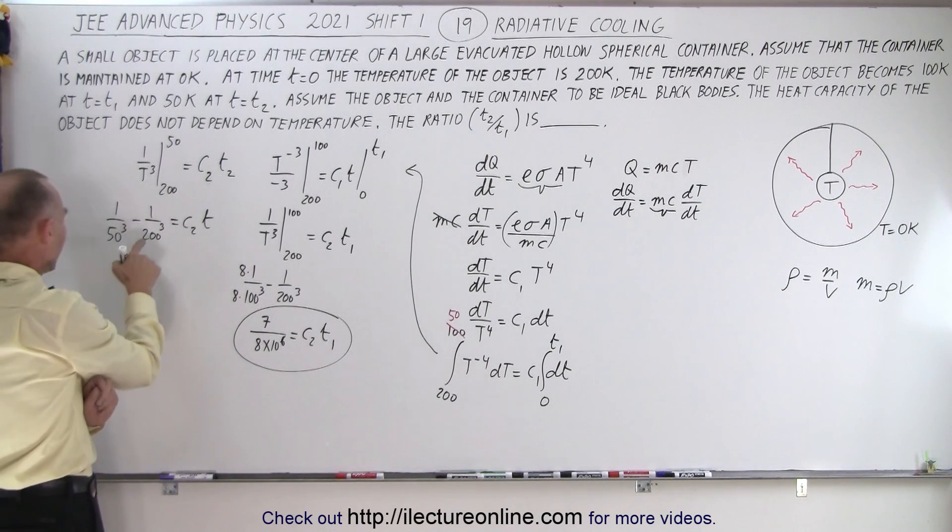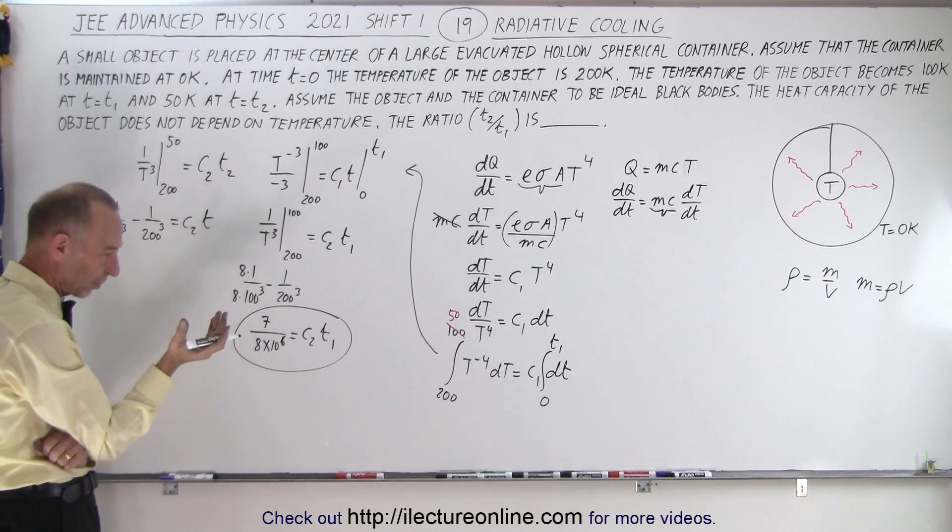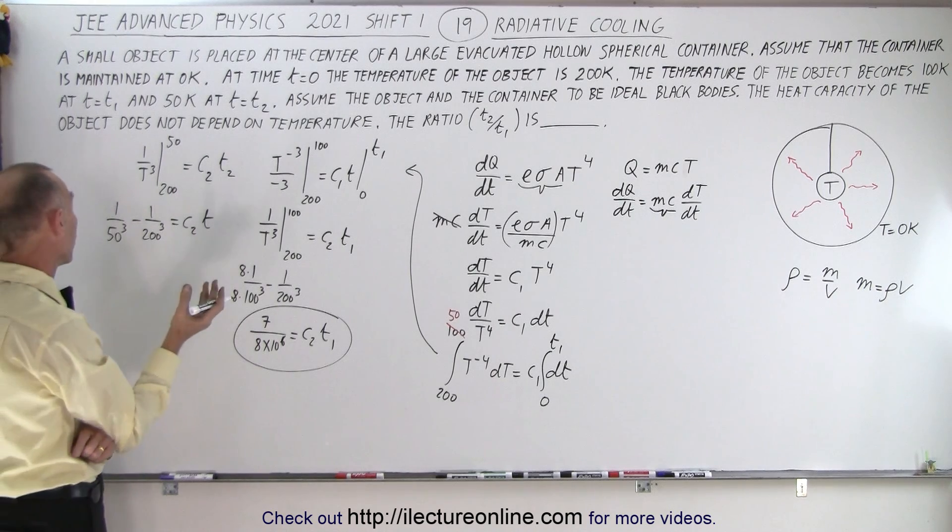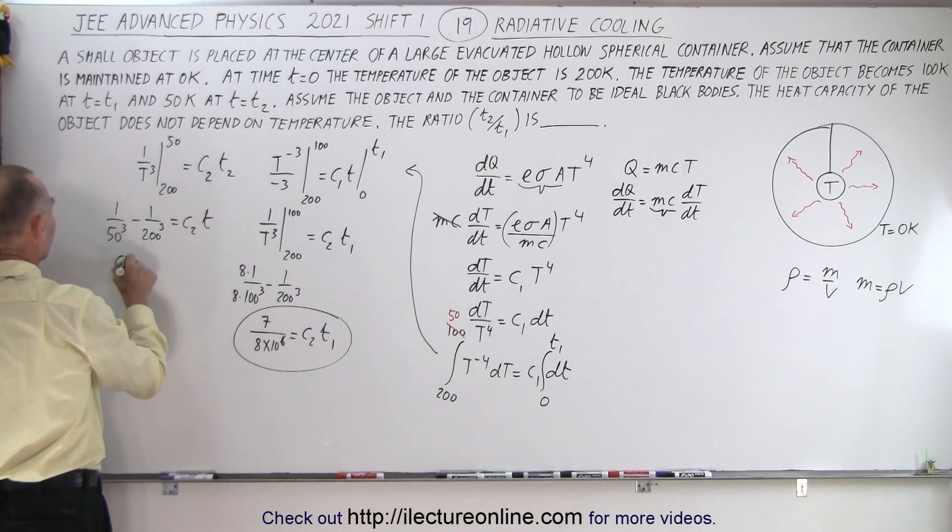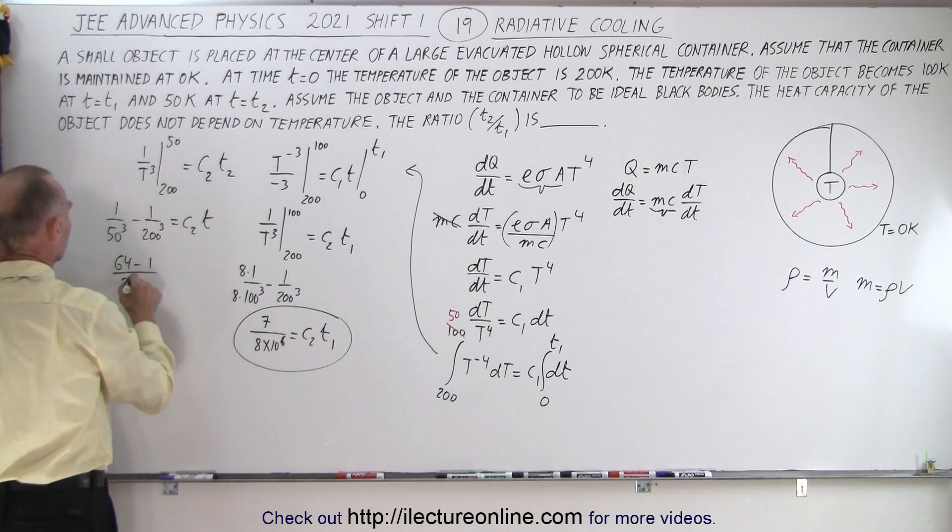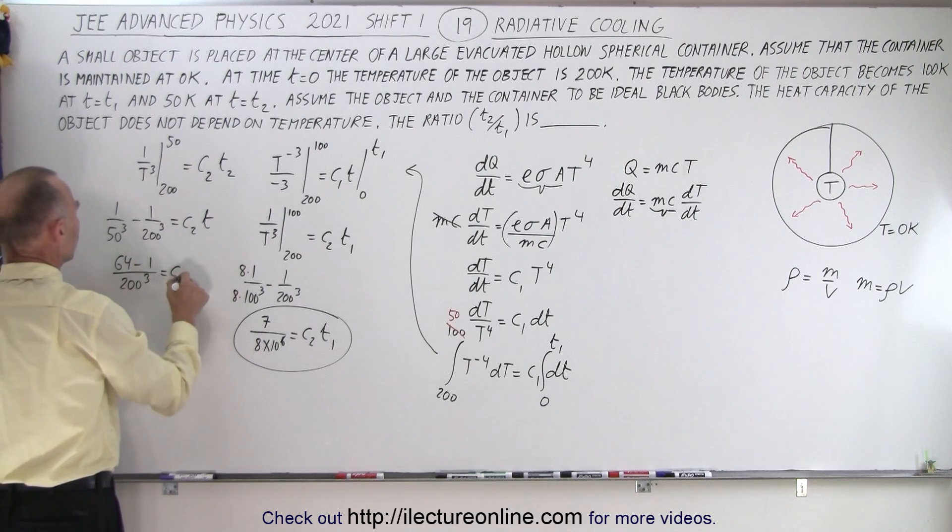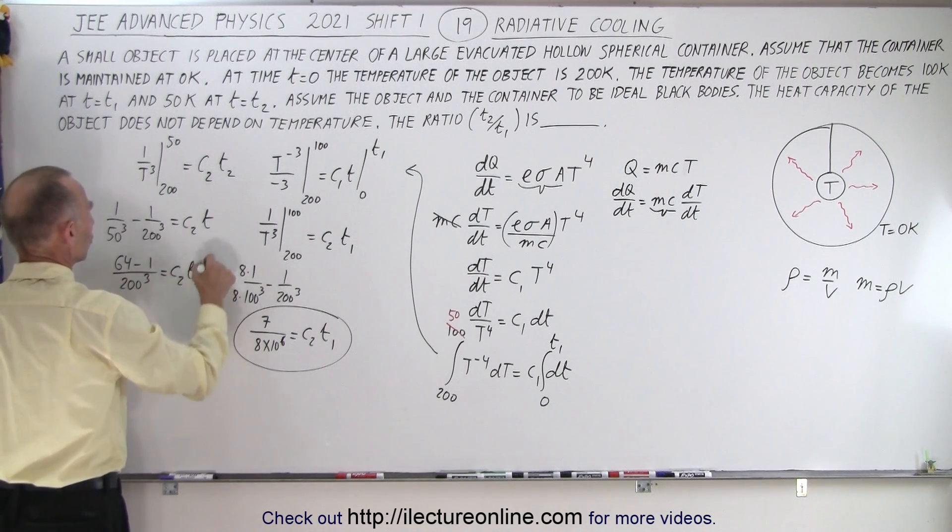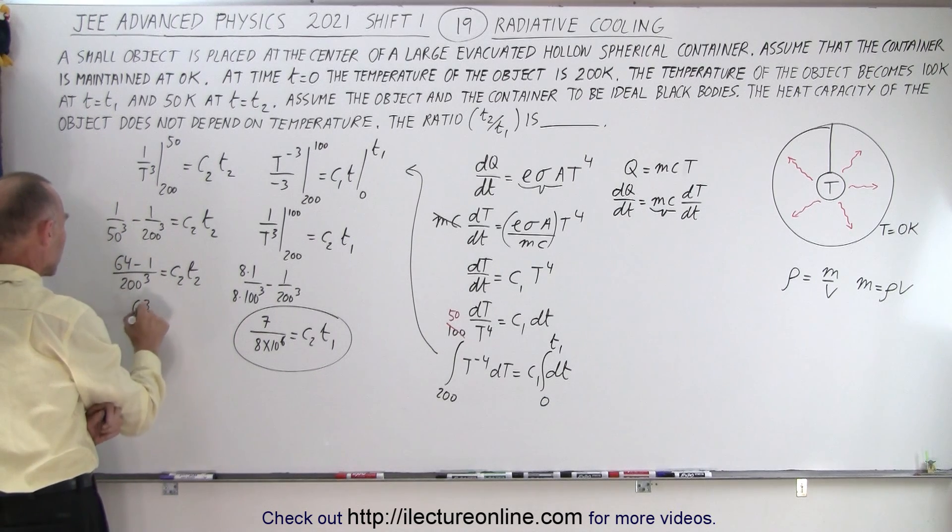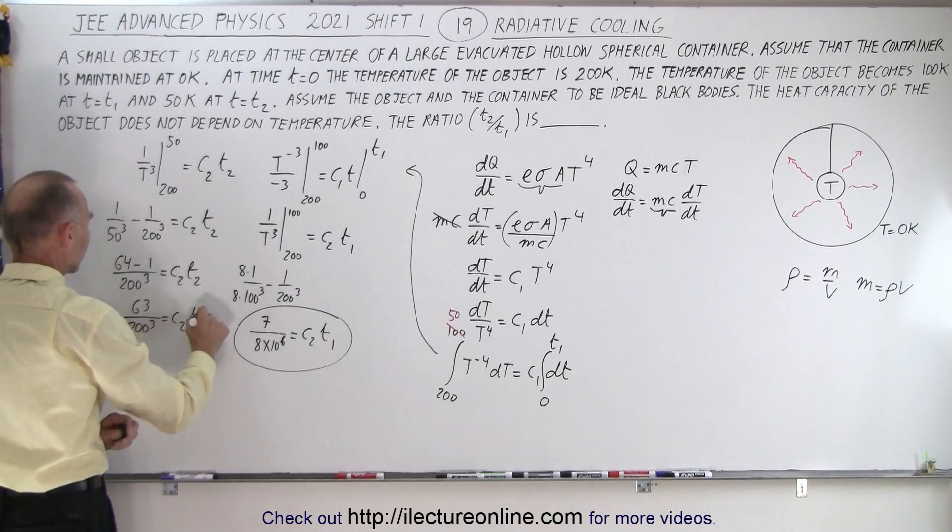Since 200 = 4×50, we have 200³ = 64×50³. Using a common denominator: (64-1)/200³ = 63/200³ = c₂t₂.